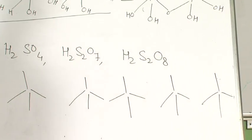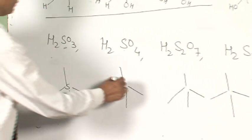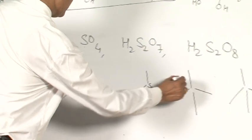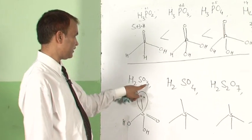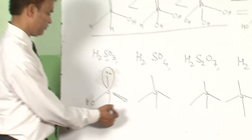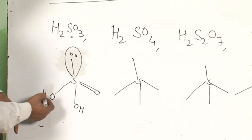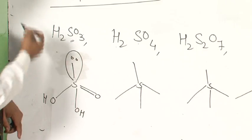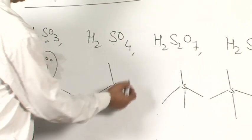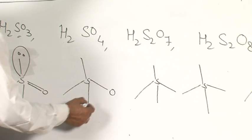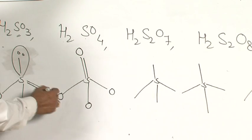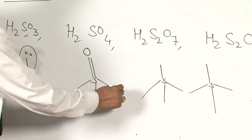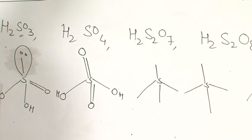The central atom is S. For H2SO3: 3 oxygen — put oxygen 1, 2, and 3, then 2 hydrogen H and H, and 1 will be lone pair of electron. For H2SO4: 4 oxygen — 1, 2, 3, and 4 — it will be double bonded, 2 hydrogen, 1 here and 1 here. It may be double bonded here or here — both OH positions are the same.